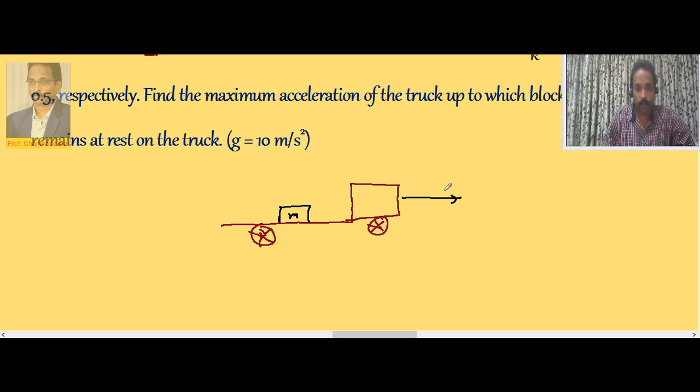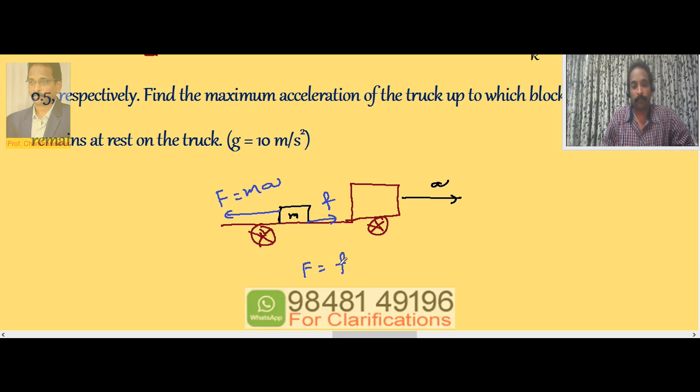So imagine truck is moving with an acceleration A. Immediately the box will experience inertial force F which is equal to ma. Now friction acts along this side, say F. If the friction balances F, if the applied force and frictional force are equal, box will remain at rest.